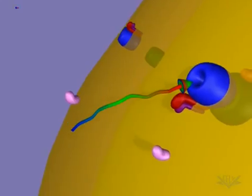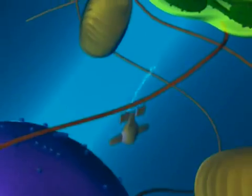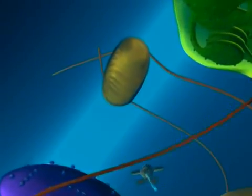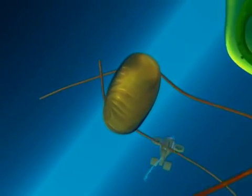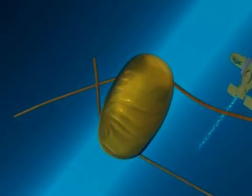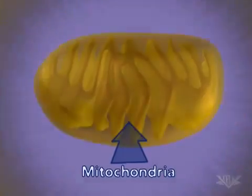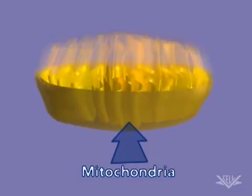Transport to the chloroplast involves a similar process. Mitochondria and chloroplasts are the sites for unique cellular processes. We'll first look at the mitochondria. This organelle produces ATP,